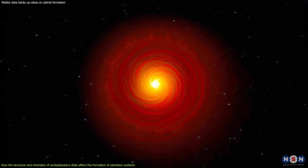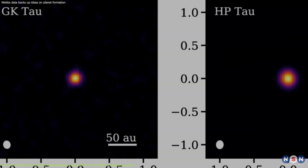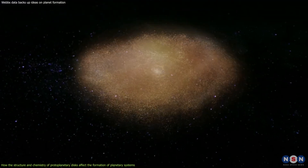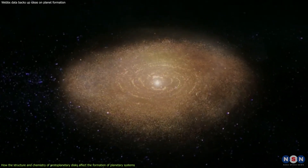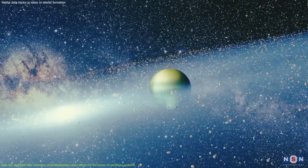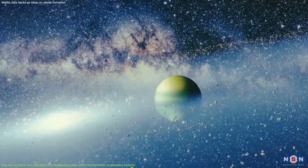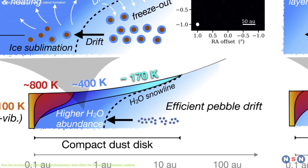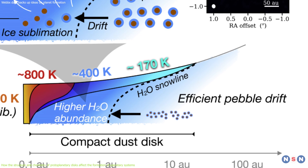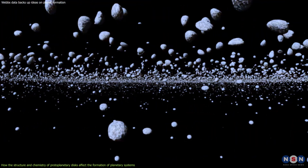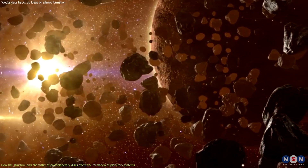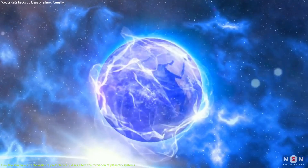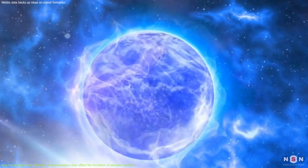The compact disks are smaller and denser than the extended disks, and they have no gaps or rings that indicate the presence of large planets. This suggests that the compact disks are younger and less evolved than the extended disks, and that they have not yet formed any large planets that could disrupt the disk or create pressure traps. The compact disks also have more water vapor in their inner regions, implying that they have more icy pebbles that drift inward and deliver more water and solids to the rocky planets. This could mean that the compact disks are more efficient at forming water-rich rocky planets, which could be more favorable for life.